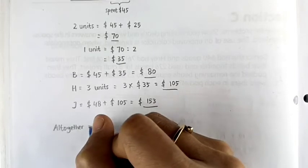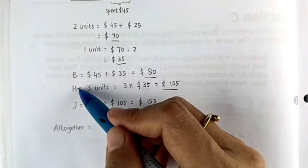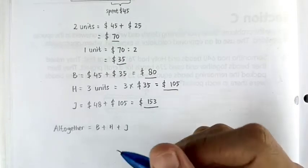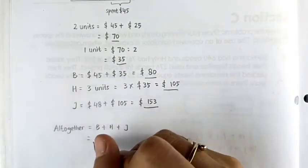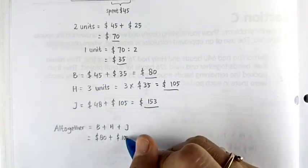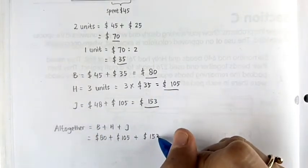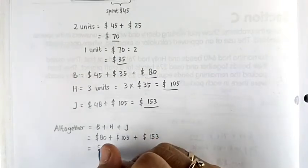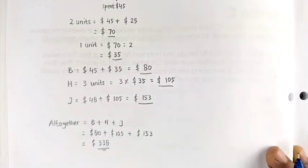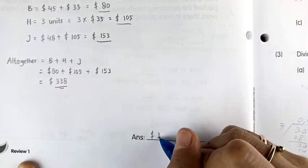Altogether: Bill had 80 dollars, Halina had 105 dollars, and Jason had 153 dollars. Adding them together, we get the answer 338 dollars. So they had $338 altogether at first.